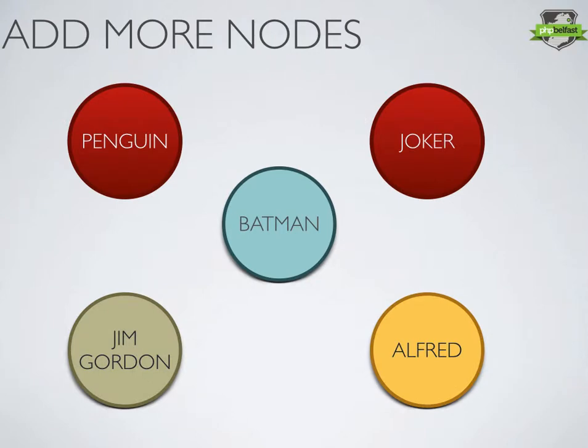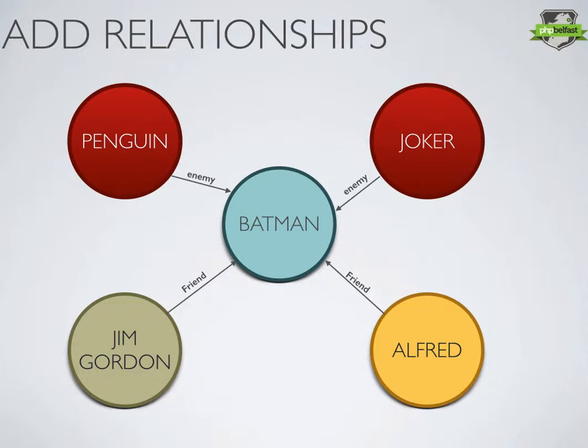If we have lots more nodes — here we only have five — they're just floating around with no relationships defined between them. What we've got to do is define how each of these nodes are related together. We do that using arrows, and those arrows indicate the direction and nature of the relationship.